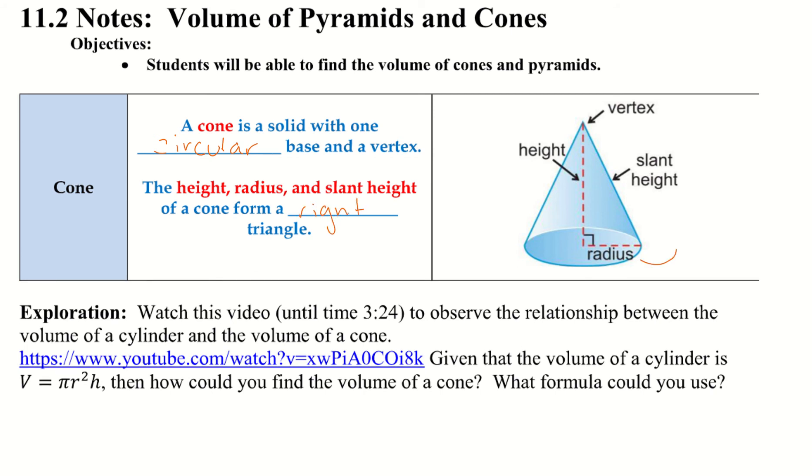We have our circle here at the bottom and it comes to the vertex at the top. And then the height, the slant, which is the side area here with the radius, create that right triangle.